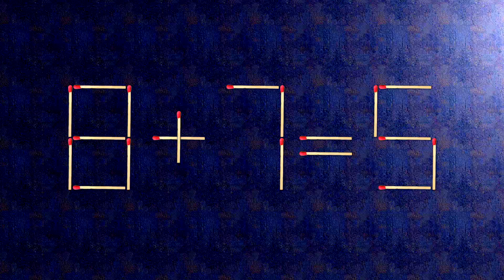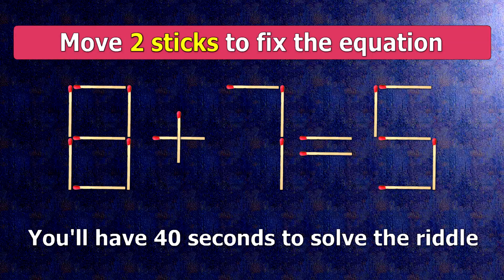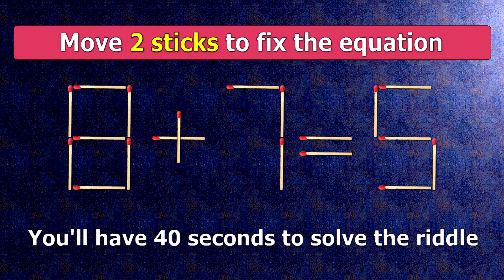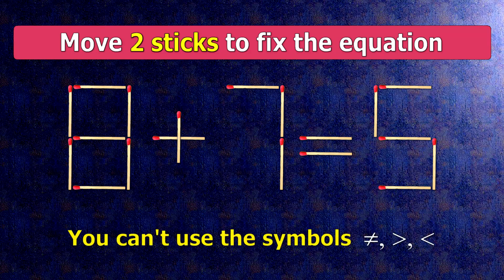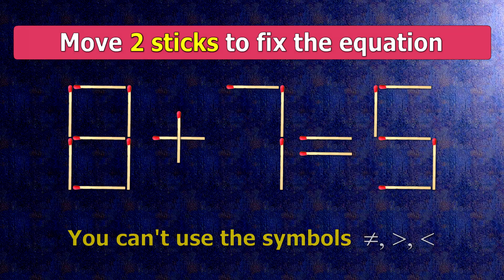We have the equality 8 plus 7 equals 5. Our equality is wrong. We need to move two matches to make our equality correct.